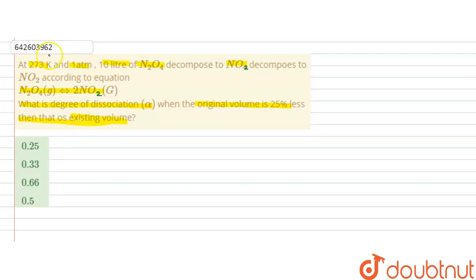In this question, it is given that at constant temperature and pressure, 273 Kelvin and 1 atmospheric pressure, 10 liters of N2O4 decomposes to NO2. We have to find out the degree of dissociation if the original volume is 25% less than the existing volume at equilibrium.